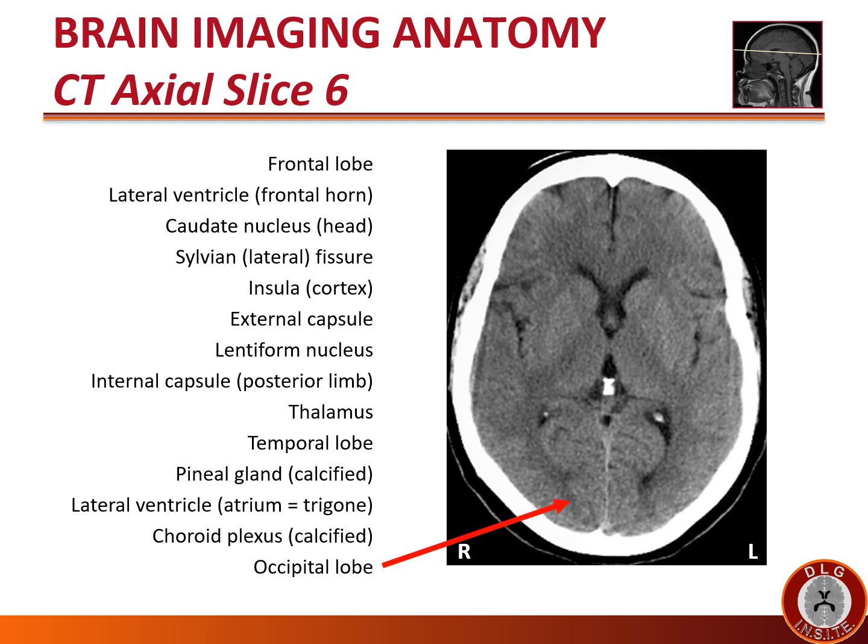Dorsally in this image we see the occipital lobe. Note that there is a falx or hyperdense line between the two cerebral hemispheres throughout the posterior aspect of this image. Therefore we are now above the cerebellum and in occipital lobe. We are not yet above the occipital lobe because we still see temporal lobe — at the levels you see temporal lobe, the posterior aspect of the brain will be occipital lobe.